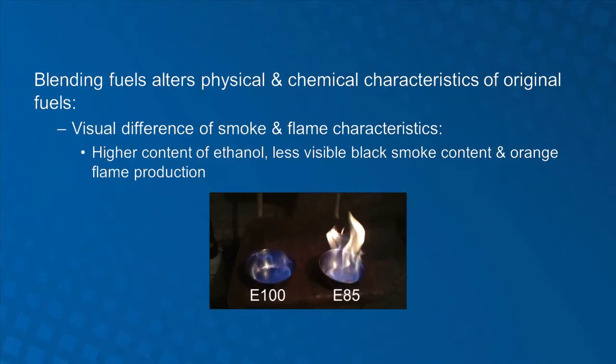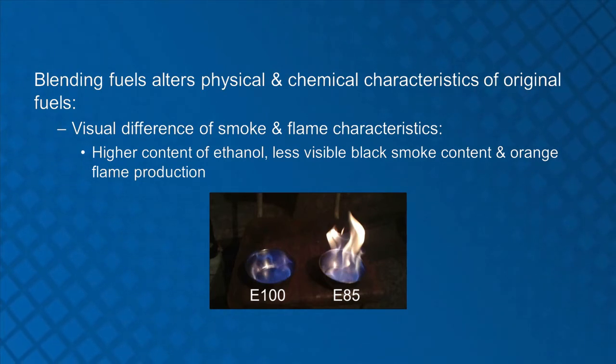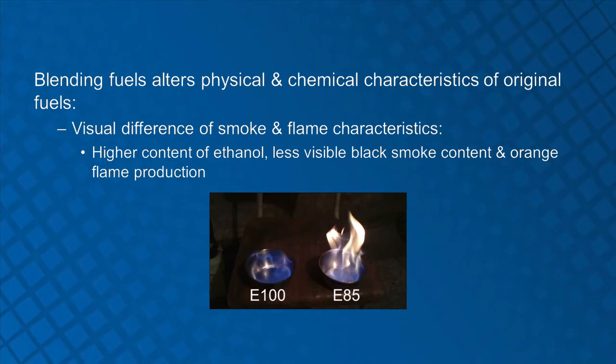Blending ethanol and gasoline produces a mixture with its own unique physical characteristics. One noticeable difference of an ethanol blended fuel versus unblended gasoline is the visual difference in smoke and flame characteristics. The higher the content of ethanol, the less visible the black smoke and an orange flame will be produced. These characteristics may be masked by other burning materials at the incident scene, such as vehicle tires, brush, or grass. The higher the concentration of ethanol, the more the fuel presents with polar solvent-type characteristics with corresponding effects on fire suppression operations.